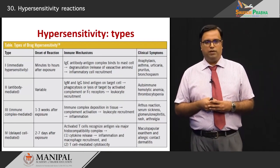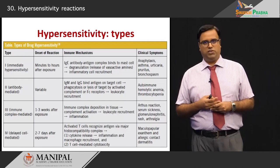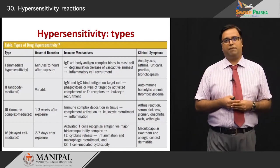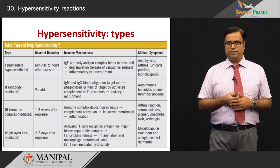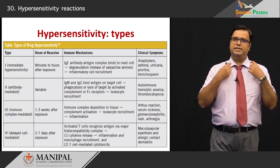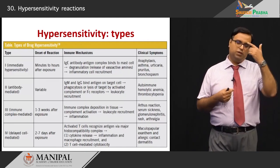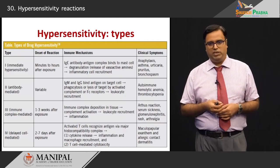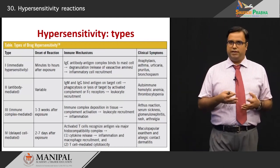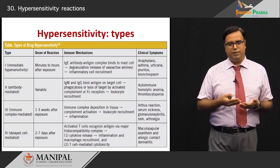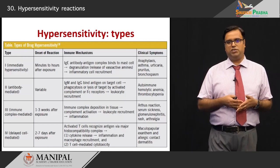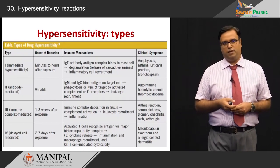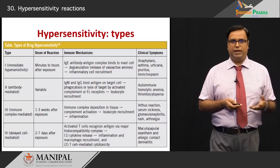The last reaction, type 4, is aptly called delayed type hypersensitivity because the time it takes to manifest is within 2 to 7 days after antigen exposure. An example is contact dermatitis — women wearing artificial jewelry may see a rash around the neck, or reactions to vermilion causing forehead rashes. The pathogenesis involves cell-mediated immunity — a T cell mediated cytotoxic reaction or cytokine release recruiting macrophages and inflammatory cells.